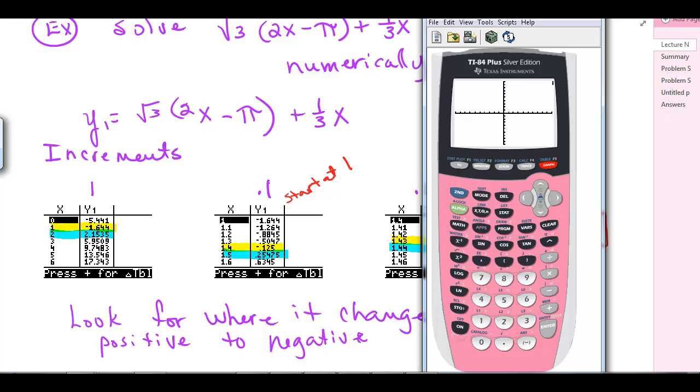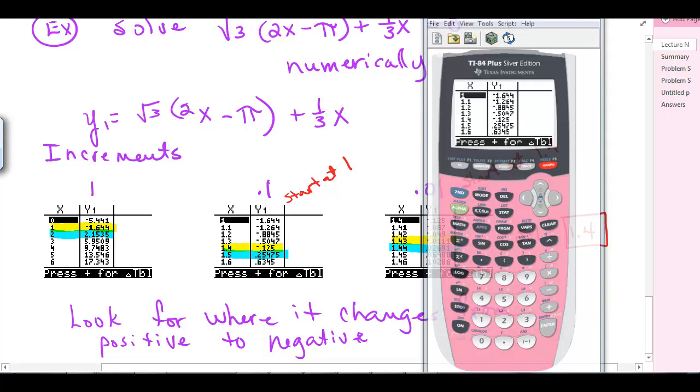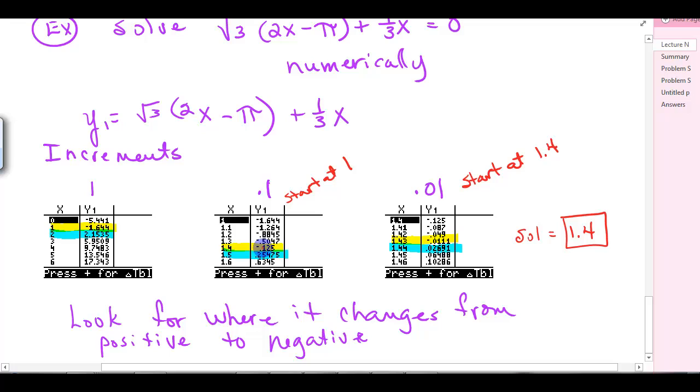Go to second table. Now I'm looking for, and you can see it right here, there's negative, there's positive. So now I know I'm between 1.4 and 1.5. I could do it one more time, start at 1.4 and do increments of 0.01, and I get that it's between 1.43 and 1.44. So I think the solution is 1.4. The problem said round to the tenth, so it would be 1.4.